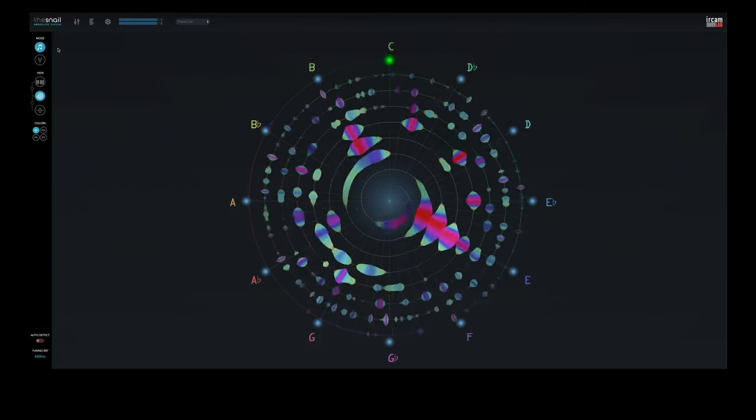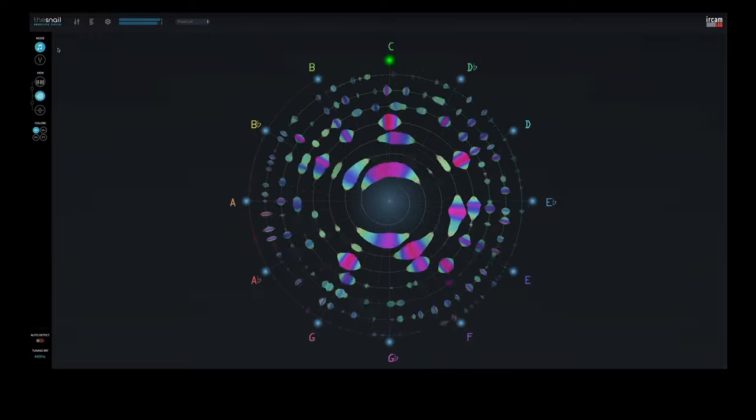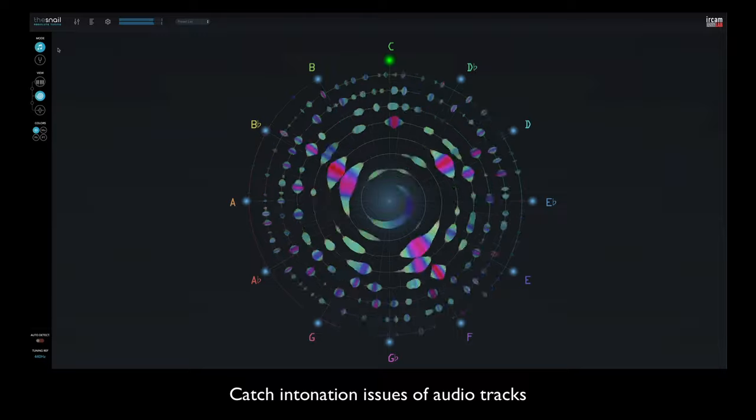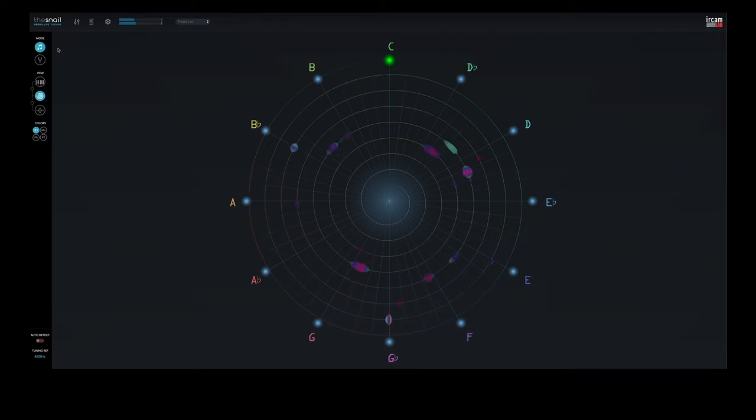The Snail view provides a representation of the fundamental frequencies and all related harmonics or overtones in real time. The sound is displayed along a spiral view from low frequencies in the center to higher frequencies as the blobs display up the spiral GUI.